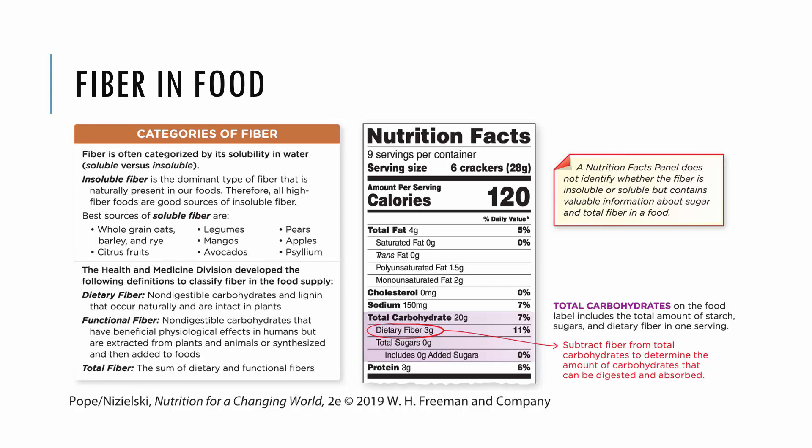Most high fiber foods have a lot of insoluble fiber in them. Soluble fiber is what we look at with whole grains, especially oats, as well as legumes, avocados, apples, and pears — all really good sources of soluble fiber. The food label shows you total fiber but doesn't tell you the type of fiber, unfortunately.